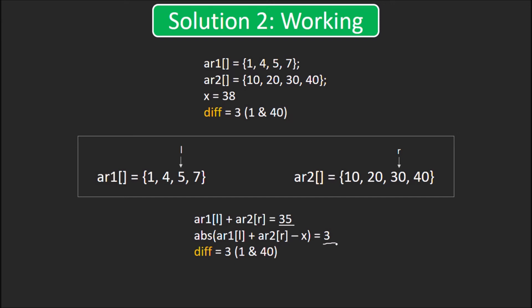Now, l is at 7, sum is 37 and the difference of sum and x is 1, which is less than the current value of diff. So, diff becomes 1 and the new closest pair is 7 and 30. Now, l has reached the end of array 1 and hence, we've reached the terminating condition of the loop. The result gets printed now.